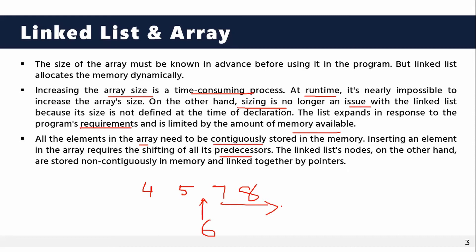When we use a linked list, we can allocate memory non-contiguously. The link is in the pointer — we can use the reference so that 5 points to 6, which points to 7, forming a sorted list.